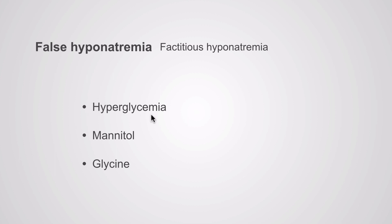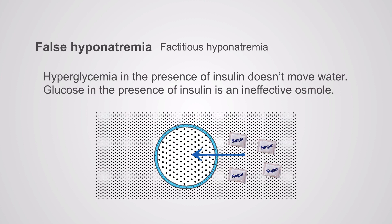We see factitious hyponatremia in hyperglycemia, which is pretty common. Mannitol is used to shift water out of the cells to lower intracranial pressure. Glycine is a dilutant used in bladder and prostate surgery that can accidentally enter the blood and cause the same picture. Notably, hyperglycemia in the presence of insulin does not move water — glucose with insulin is an ineffective osmol, so it moves into the cells without causing a water shift out.